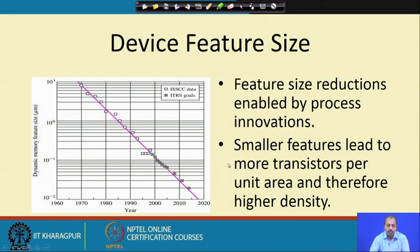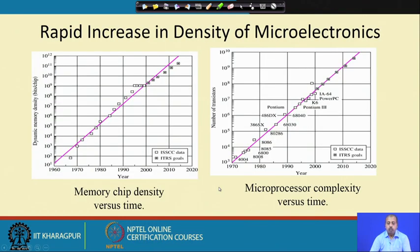This is a plot up to 2000, predicted up to 2020, showing dynamic memory interface feature size in microns — that has come down significantly. If you look into memory chip density versus time, the density is also increasing significantly over the years, following more or less an exponential development.